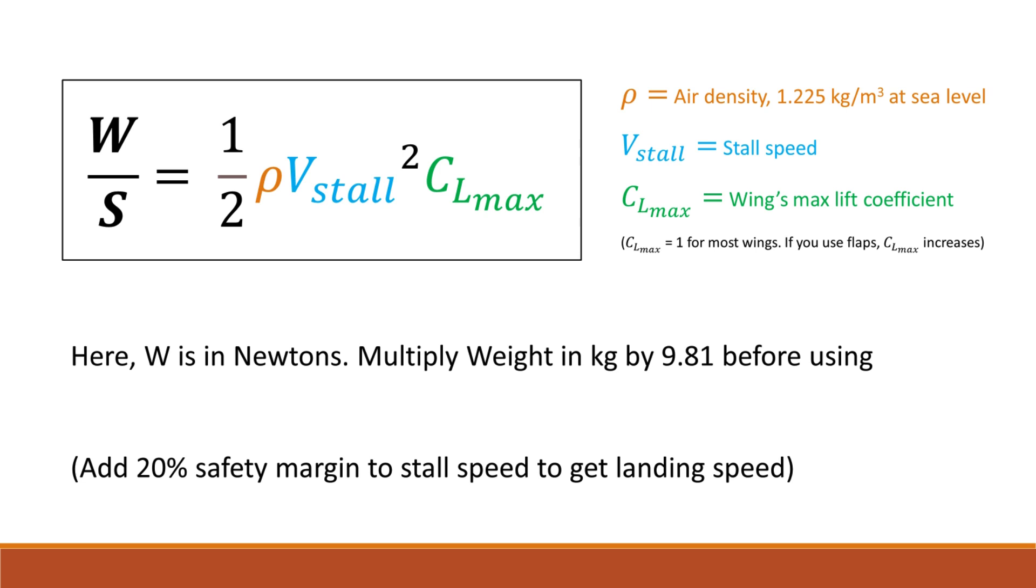Rho is the air density, which is around 1.225 kg per cubic meter. V-stall is the plane's stall speed and CLmax is the wing's maximum lift coefficient. CLmax for most wings is around 1. If you use flaps, CLmax increases. In this formula, make sure W is in newtons and not in kilograms.